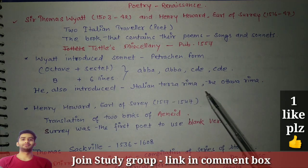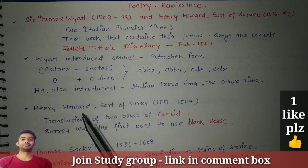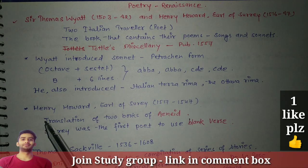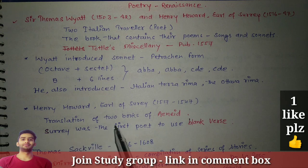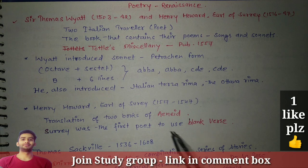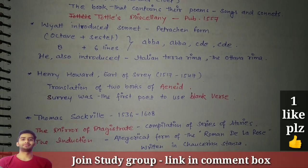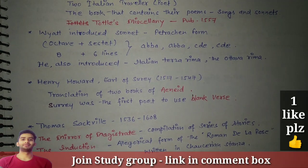Next is Henry Howard, Earl of Surrey. He did the translation of two books of the Aeneid. Surrey was the first poet to use blank verse — remember this. So Surrey is notable for two things: being the first to use blank verse, and his translation of two books of the Aeneid.